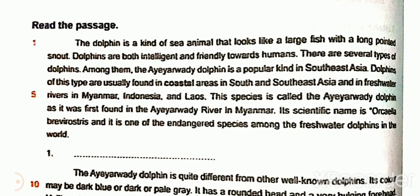Read the passage. The dolphin is a kind of sea animal that looks like a large fish with a long pointed snout. Dolphins are both intelligent and friendly to humans. There are several types of dolphin. Among them, the Irrawaddy dolphin is a popular kind in Southeast Asia. Dolphins of this type are usually found in coastal areas in south and Southeast Asia, and in freshwater rivers in Myanmar, Indonesia, and Laos. This species is called the Irrawaddy dolphin as it was first found in the Irrawaddy River in Myanmar.